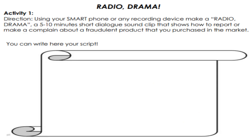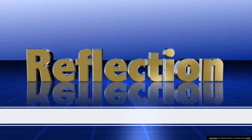Radio Drama direction: Using your smartphone or any recording device, make a radio drama — a 5 to 10 minute short dialogue sound clip — that shows how to report or make a complaint about a fraudulent product that you purchased in the market. Please answer the assigned activities, answer the reflection section, and write your notes in your notebook and answers in your module. Stay safe everyone. Avoid going outside if possible.